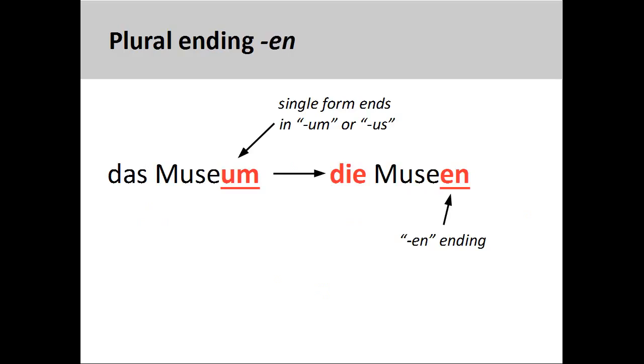Finally, it is important to note that words of Latin origin ending in -us or -um, such as Museum, museum, add -en in the plural, Museen.